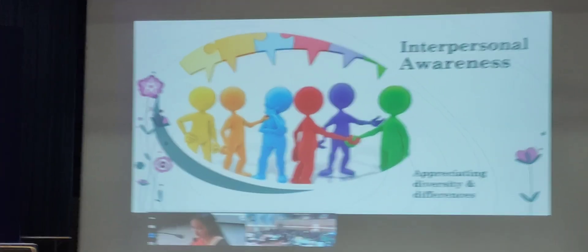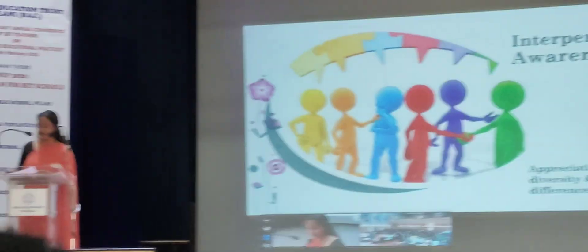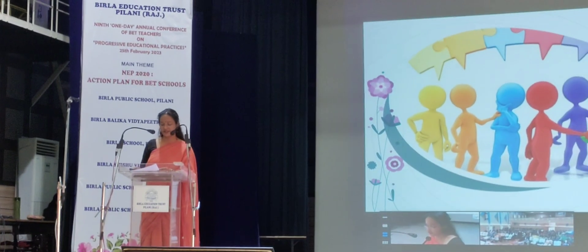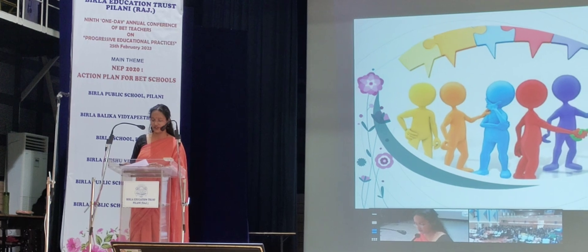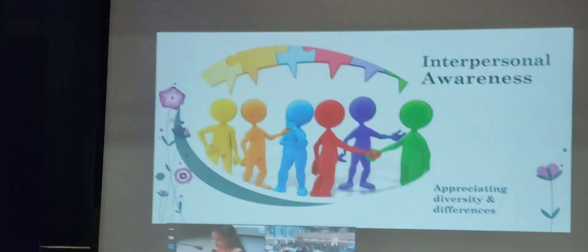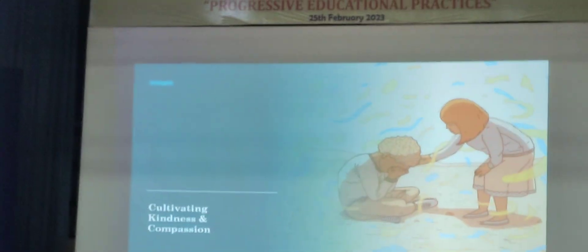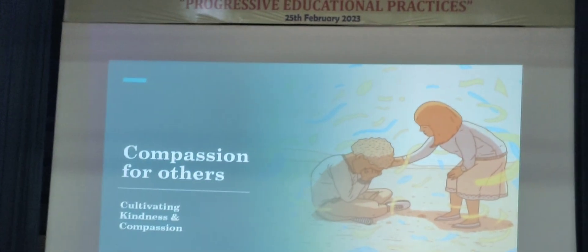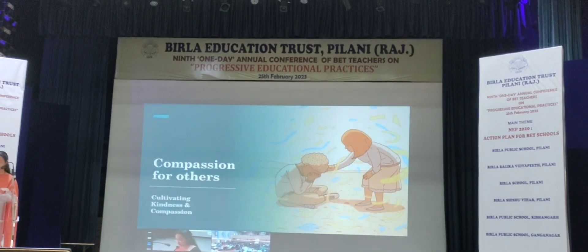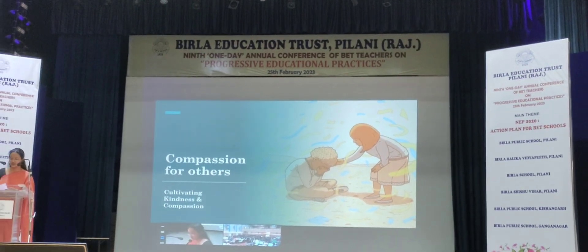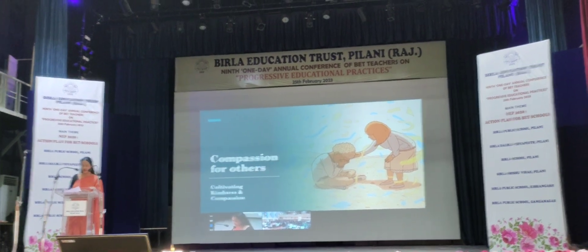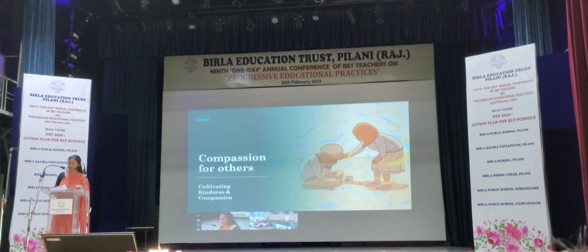Component 4: Interpersonal Awareness — attending to our social reality, shared reality with others, appreciating diversity and differences. Component 5: Compassion for Others — understanding others' feelings and emotions, appreciating and cultivating kindness, compassion, and other ethical dispositions.